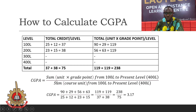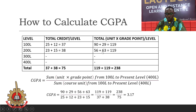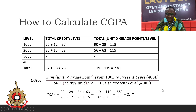To calculate your CGPA, apply the formula: 90 + 29 + 56 + 63 = 238 (sum of all unit-grade products), divided by 75 (total units registered). So 238 divided by 75 gives you 3.17 as your CGPA at the end of 200 level second semester. If you want your CGPA at the end of 200 level first semester, simply remove the 15 units and 63 product score from the calculation.